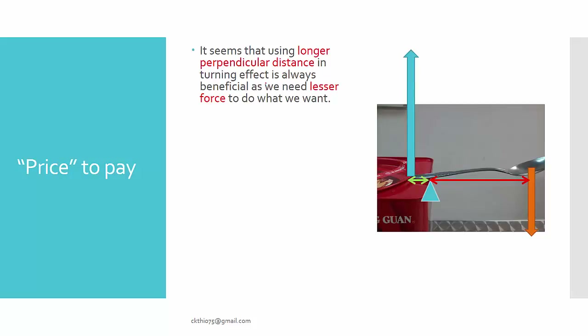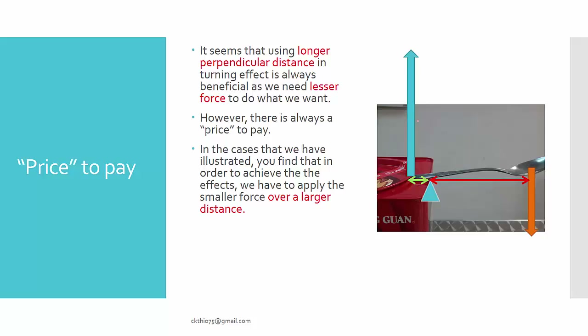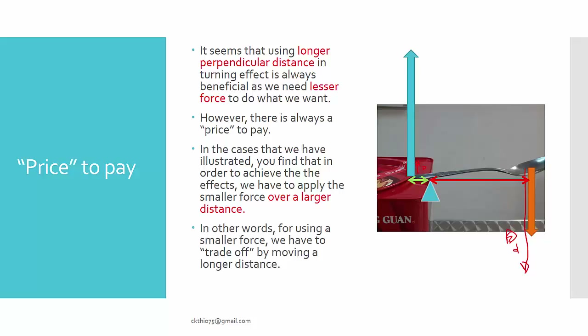However, using a longer perpendicular distance is not without cost — there's always a trade-off. In all the cases illustrated, to generate a large output force, we have to apply the small input force over a larger distance. For example, to pry open the tin, you have to move the spoon down a large distance, while the lid only moves a very small distance. In order to use a large force, we trade off by moving through a longer distance.